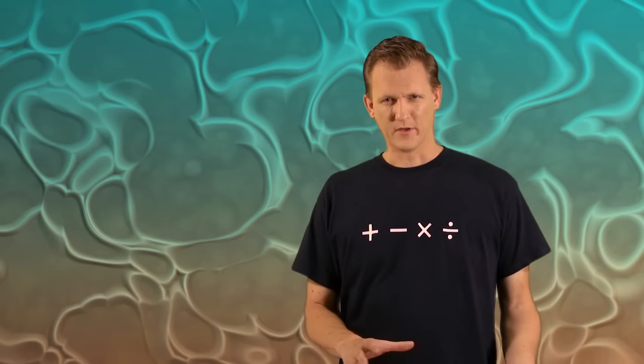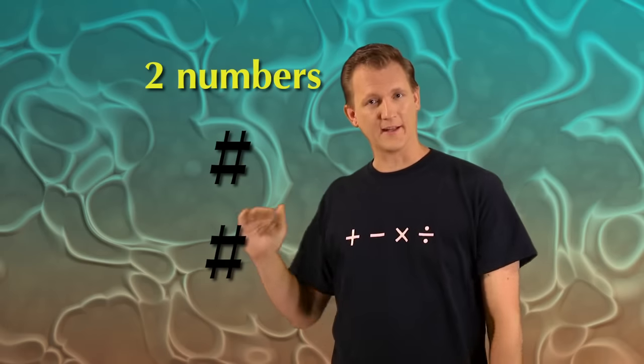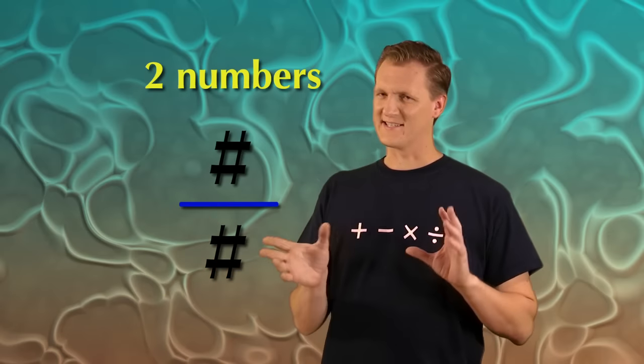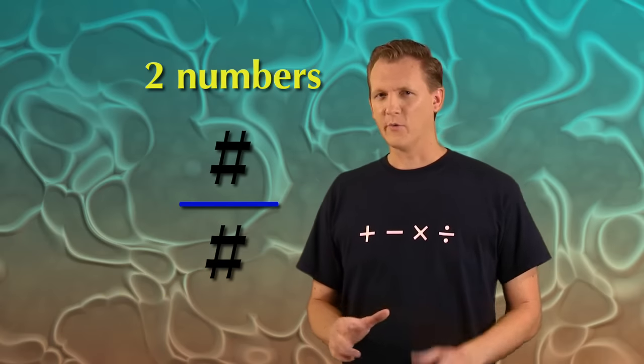Unlike a regular number, to write a fraction you need two numbers. One number on top, one number on bottom, and a line between them. I'll explain exactly what the line's for later in the video. But for now, let's figure out what those two numbers mean.